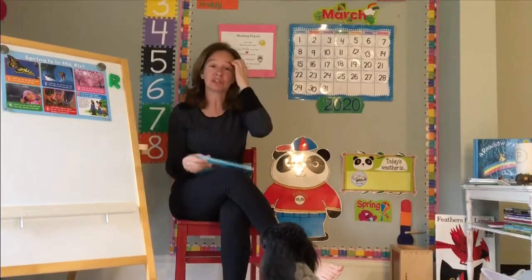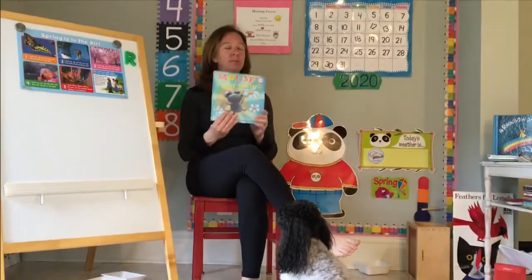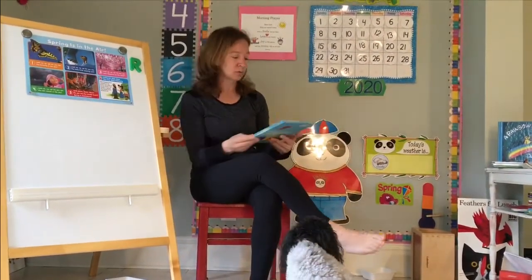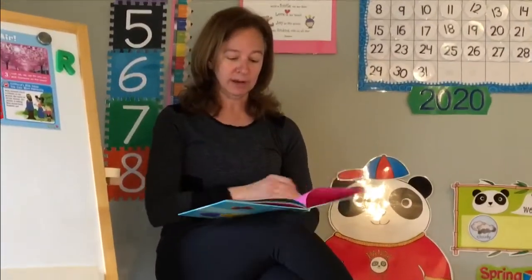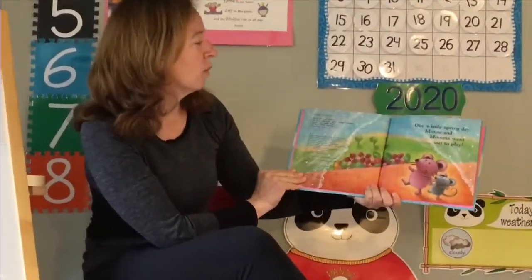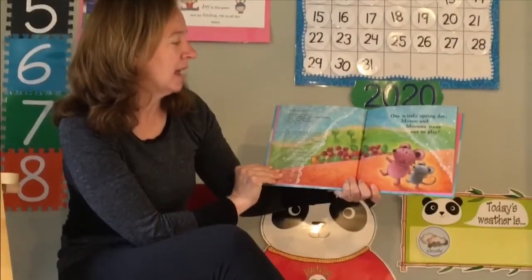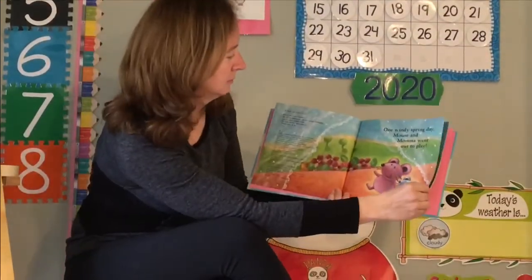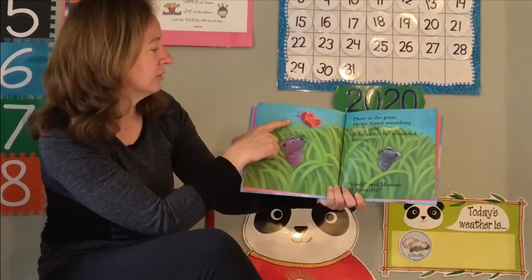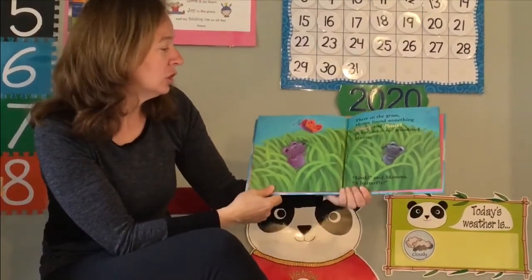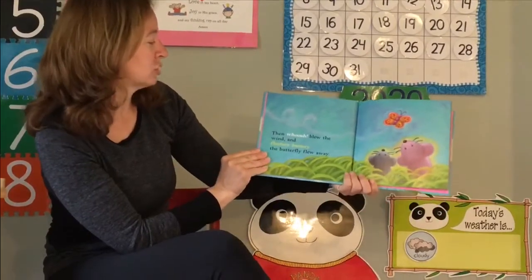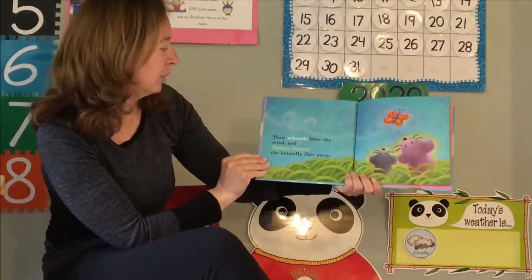Let's read our first book — we're going to read two books this morning. Our first one is called Mouse's First Spring. We read a book about Mouse in the beginning of the year when it was his first day of school, so let's see what happens on his first day of spring. One windy spring day, Mouse and Mama went out to play. There in the grass, Mouse found something glittery and flittery. 'What can it be?' wondered Mouse. 'Look,' said Mama. 'A butterfly.' Then whoosh blew the wind, and fluttery-buttery, the butterfly flew away.